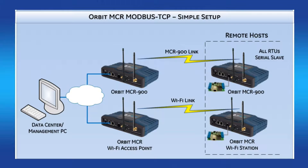Once a TCP connection is established, serial traffic from the COM port can pass to and from the TCP port as long as the TCP connection remains established. When a terminal server on the unit is configured as a Modbus TCP server, the unit listens on a TCP port for a client connection. Once a TCP connection is established, the unit will convert the incoming Modbus TCP frame into either a Modbus RTU or Modbus ASCII frame for transmitting on the serial port. Serial data received is converted from either Modbus RTU or Modbus ASCII to Modbus TCP for transmission back to the Modbus TCP client.